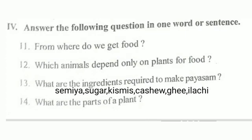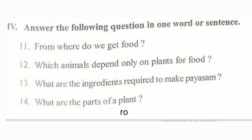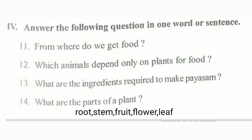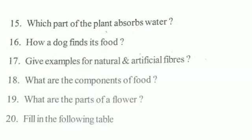What are the ingredients required to make semiya payasam? Sugar, kismis, cashew, ghee, and cardamom are the ingredients. What are the parts of a plant? Root, stem, fruit, flower, and leaf are the plant parts.